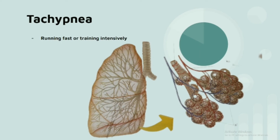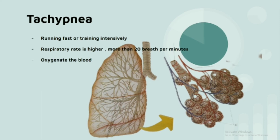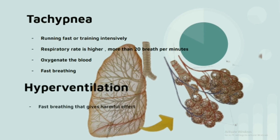For example, when you are running very fast or training extensively, your respiratory rate will be higher, but it is then necessary to oxygenate the blood, and this does not cause any harmful effect. What I mean by that is tachypnea is a term that generally means fast breathing, while hyperventilation is fast breathing that gives a harmful effect to your body because it does not give anything for the body's oxygen needs. Instead, it affects the oxygen level.